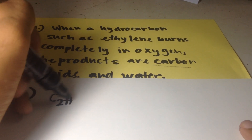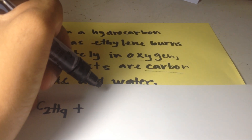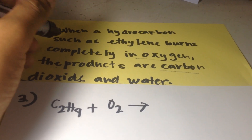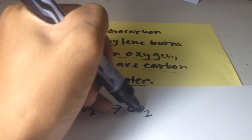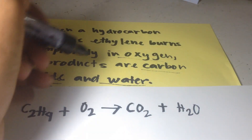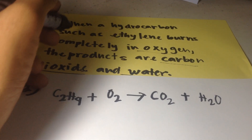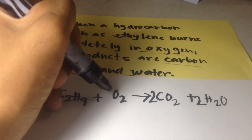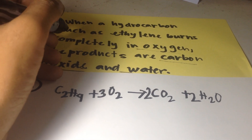C₂H₄ plus oxygen gas reacts to produce carbon dioxide and water. It's not completely balanced yet, so we need to balance it first. Let's write 2 moles of carbon dioxide, 2 moles of water, and 3 moles of oxygen. This is a combustion reaction.